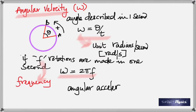Centripetal acceleration is always present whether you go at a constant rate or speed up — you always have the centripetal. But if you speed up, in addition to centripetal you also have tangential acceleration. It's called tangential because the centripetal is along the radius — also called radial — while this one is tangential. Don't mix up the two.